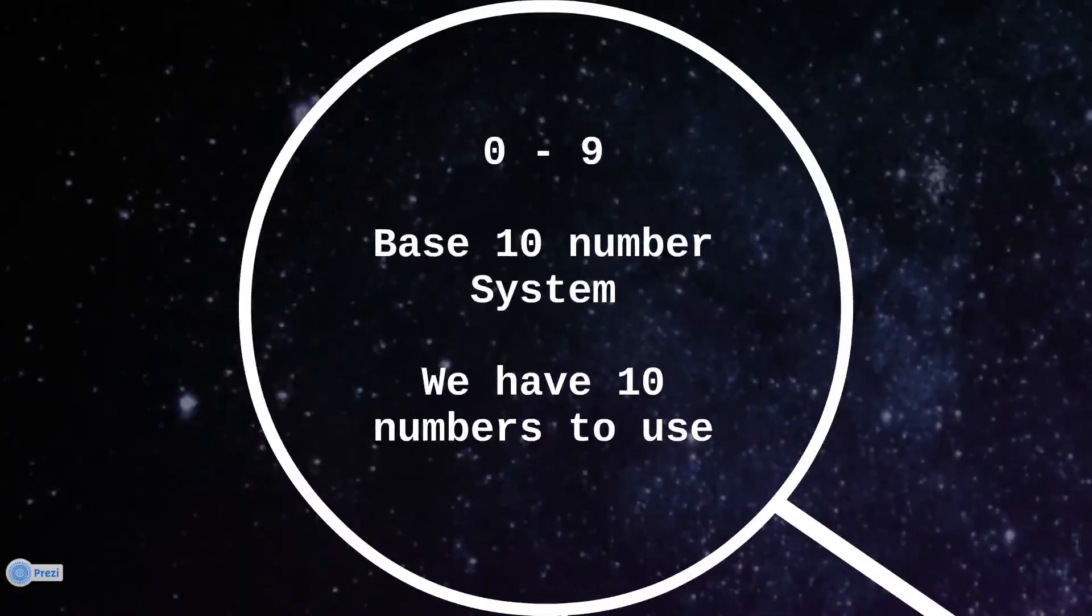I'm going to explain how we count. You probably never really noticed how we count, but we use the base 10 number system, meaning we have 10 numbers to use: 0 to 9, which is 10 numbers.